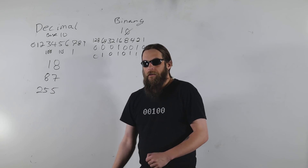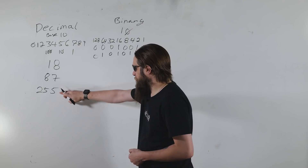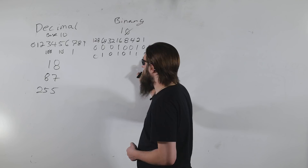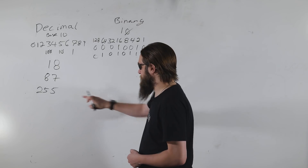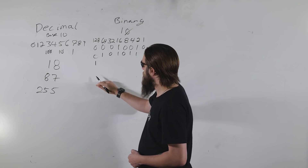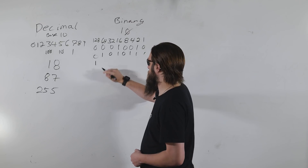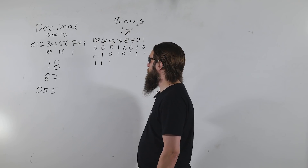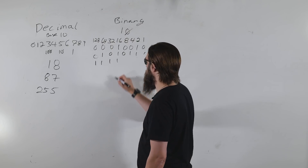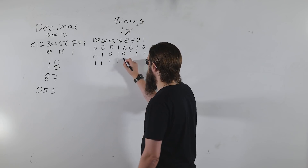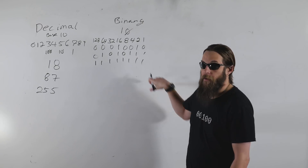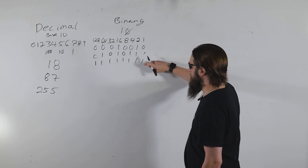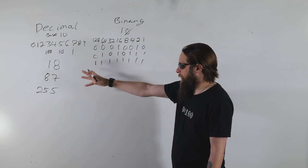255 — some of you are chuckling, and you know why. 255 minus 128 is 127, minus 64 is 63, minus 32 is 31, minus 16 is 15 — you get the idea. It's a string of eight ones. So 18, 87, 255 — and that's how you translate any number into binary.